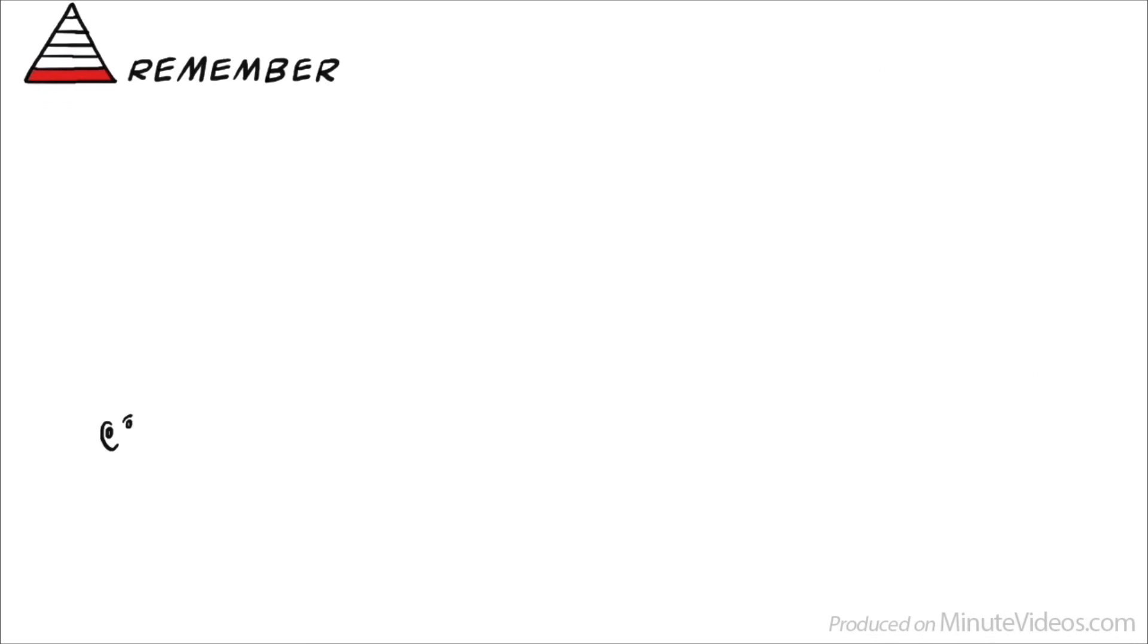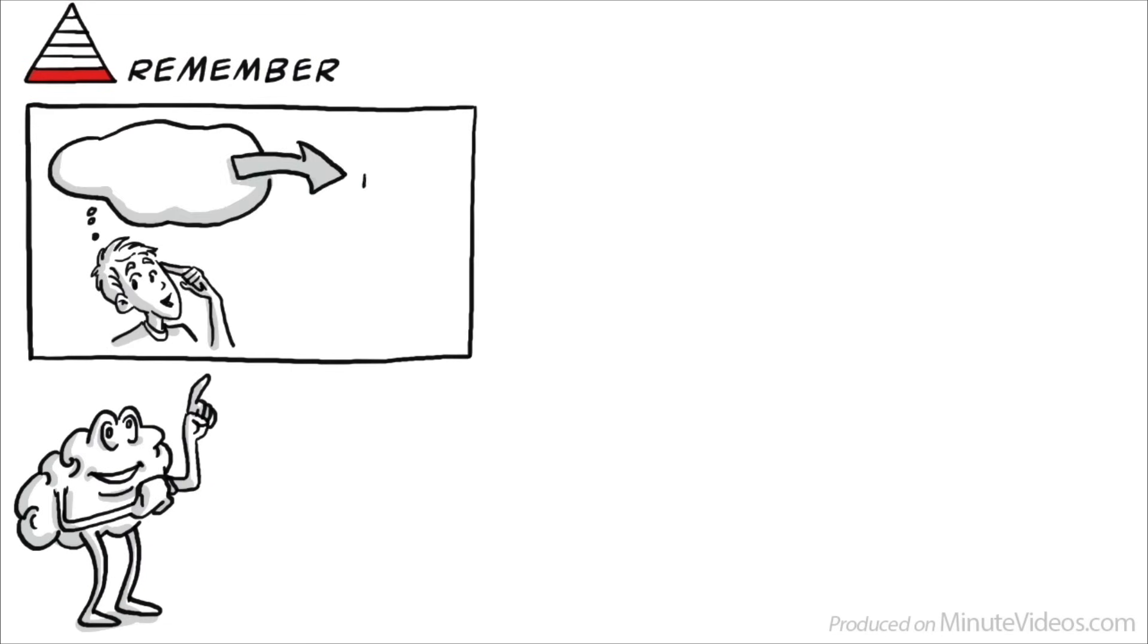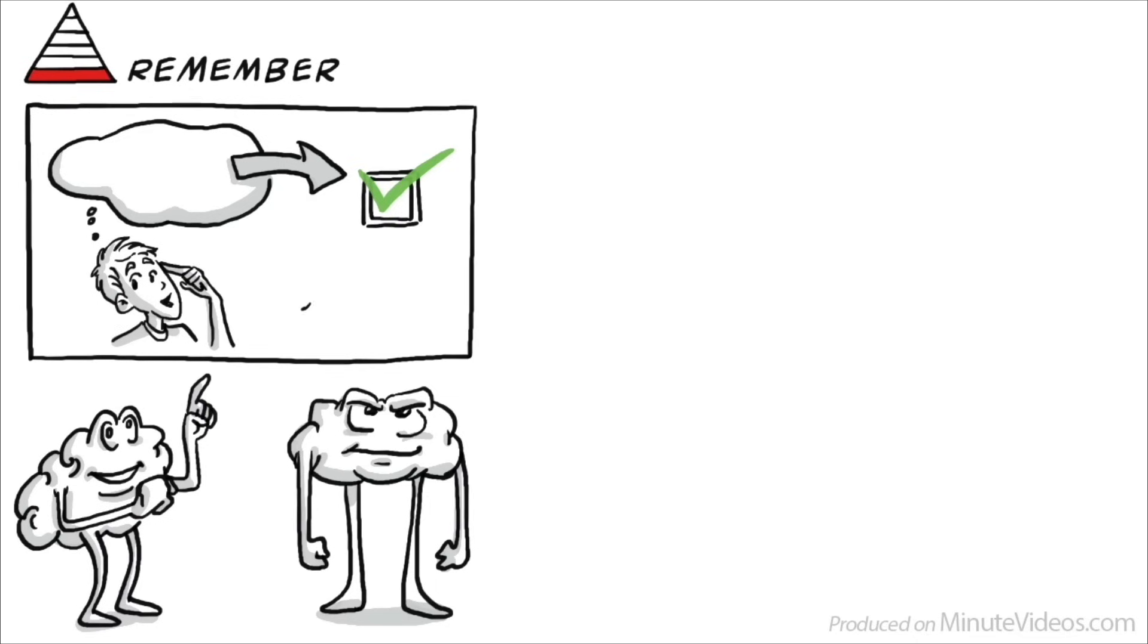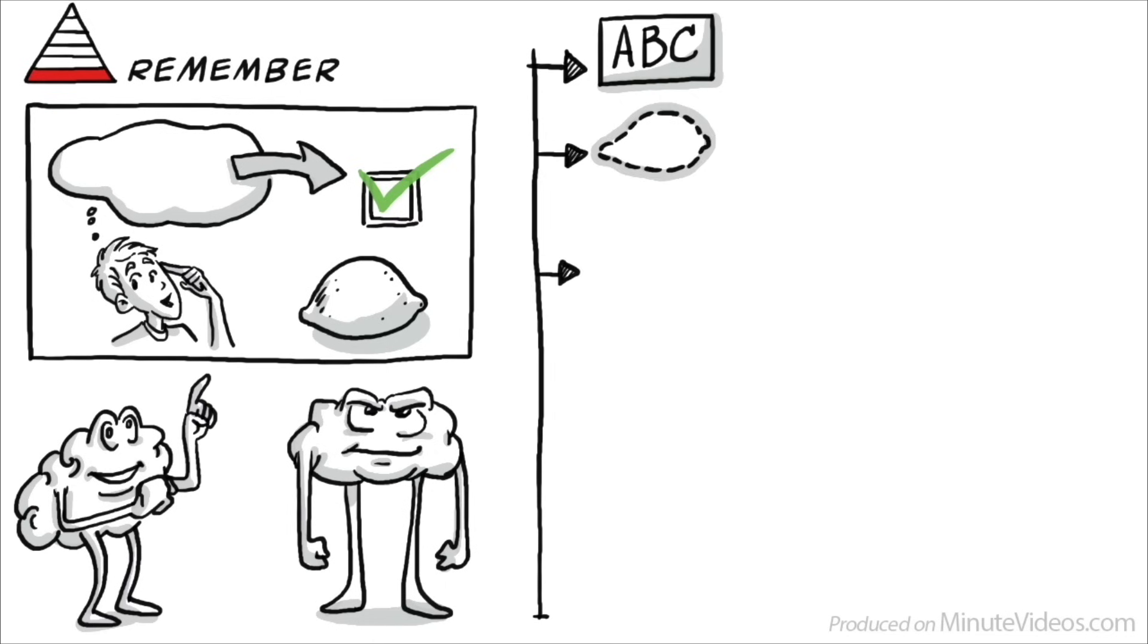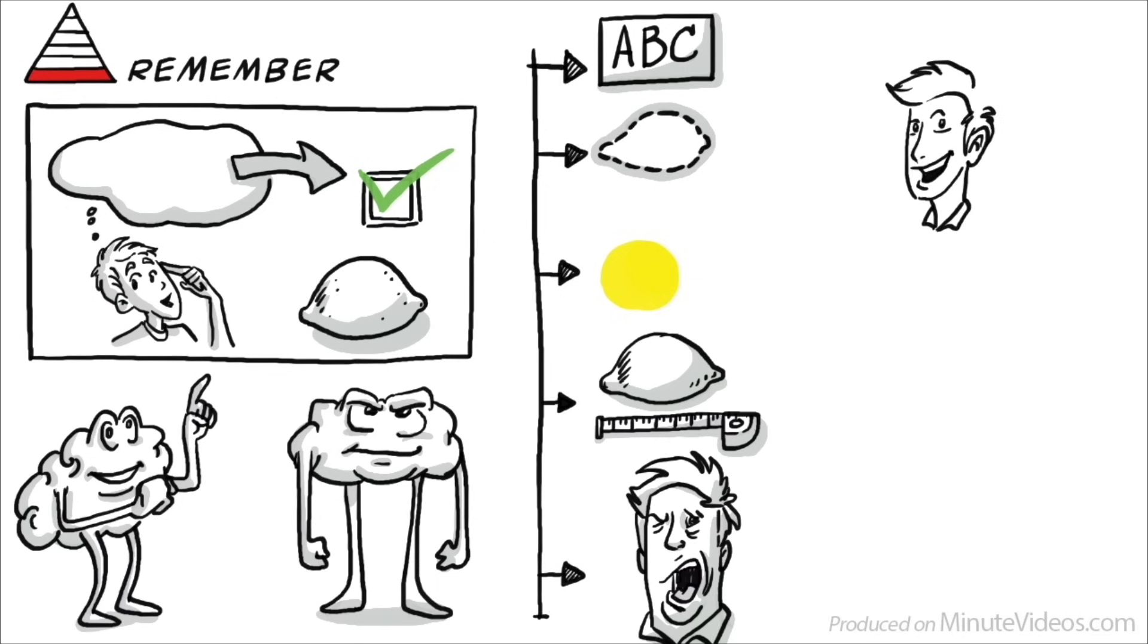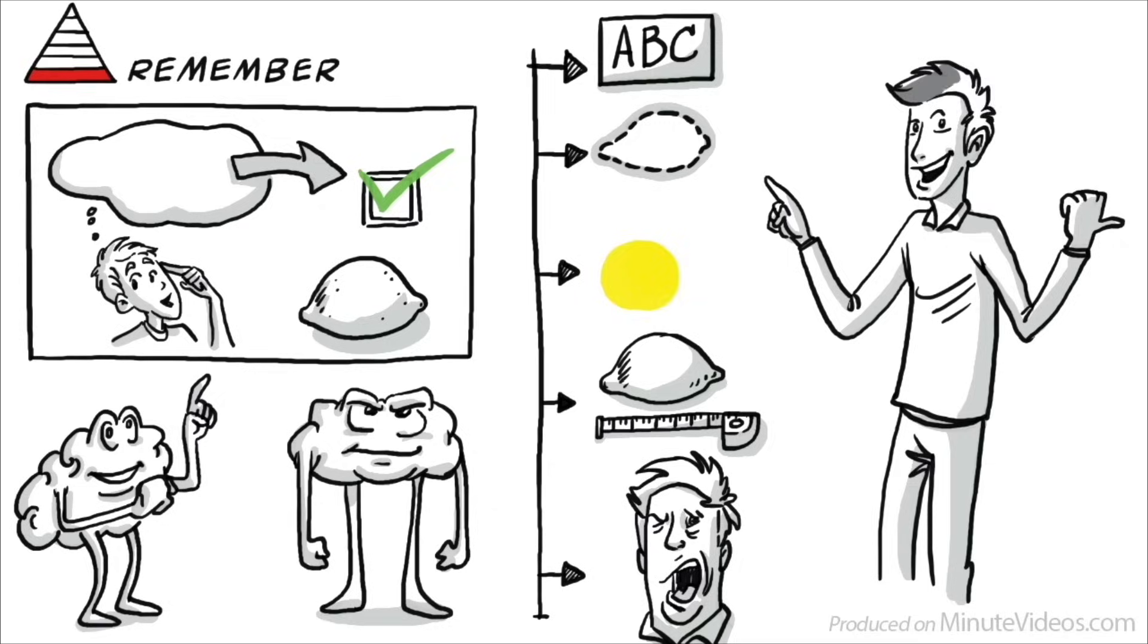On the first level, we learn to remember. There is just rote memorization and recollection of facts without much understanding. For example, if we learn about lemons, we want to remember the name, shape, color, size, and that they are sour. Once we memorize these essentially meaningless facts, we move to the second level of learning.